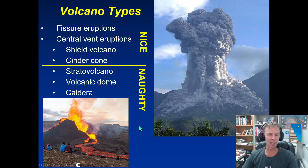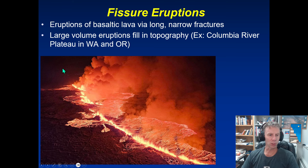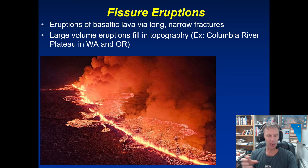So let's look at these in a little bit of detail. We'll toggle back and forth between some slides and some videos as well. We'll start with fissure eruptions — the nice volcanoes. Fissure eruptions — we've seen plenty of these in Iceland over the last year. These are cracks in the ground where the magma comes up along that crack and erupts along the entire length of the fissure.